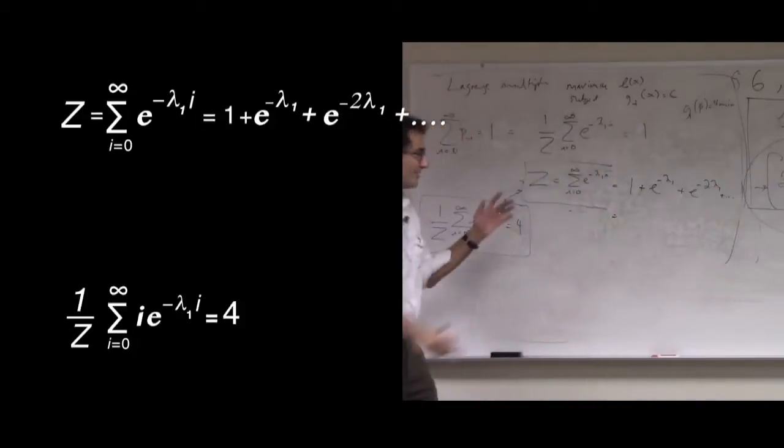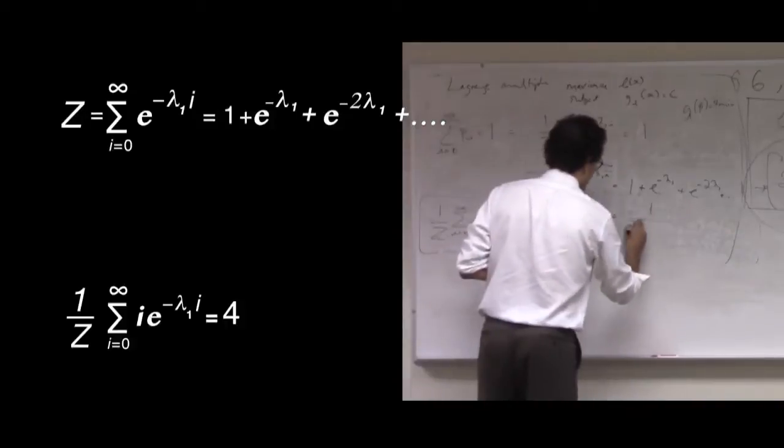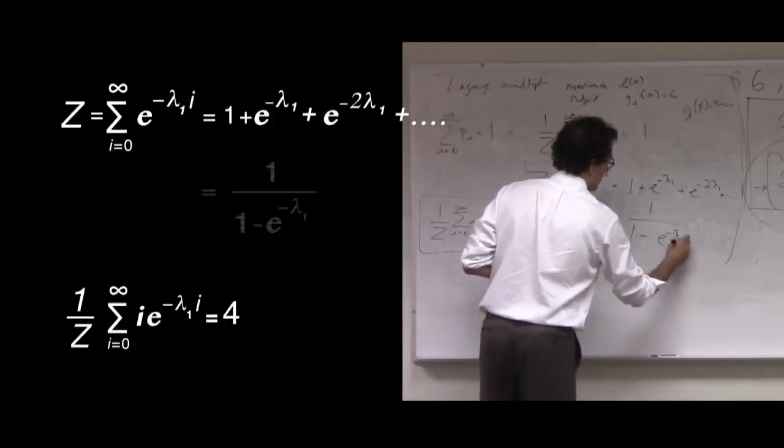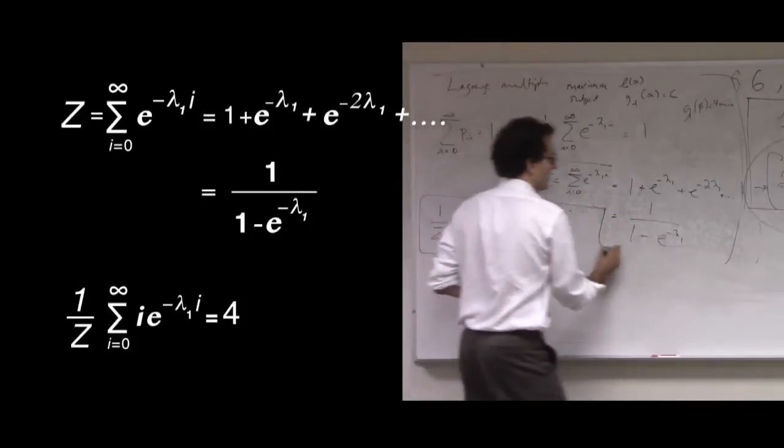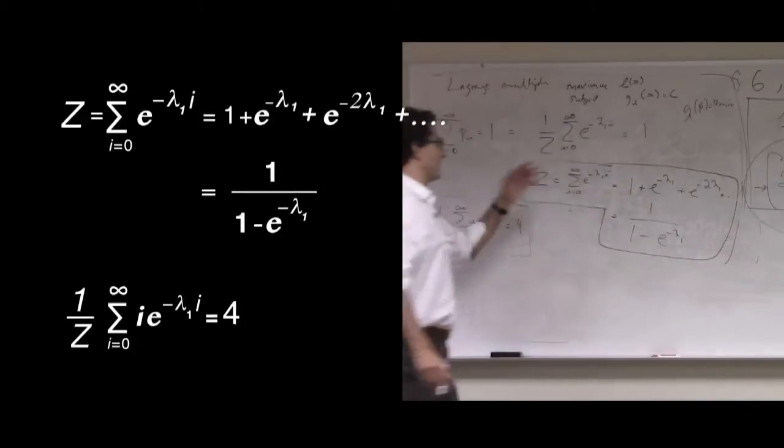And so we know the geometric series of that form by a very nice argument that we won't do here sum to 1 over 1 minus e to the negative lambda 1. So we know already how to reduce this infinite sum to a very elegant form.